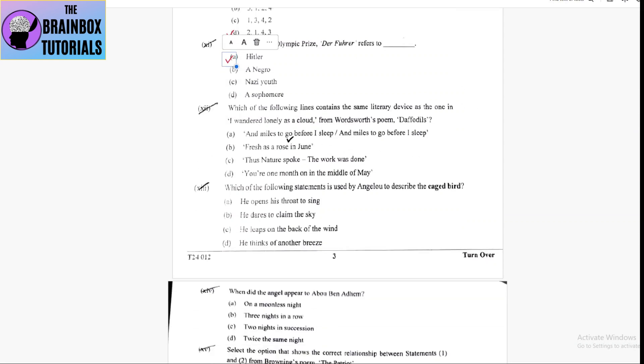Next one, which of the following lines contains the same literary device as the one in I wandered lonely as a cloud from Wordsworth's poem, Daffodils. Here, in I wandered lonely as a cloud, simile has been used. The literary device is simile. So, here let us see in ABCD which one has simile.